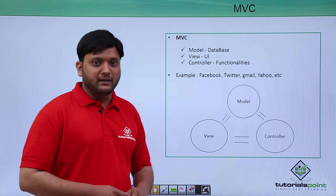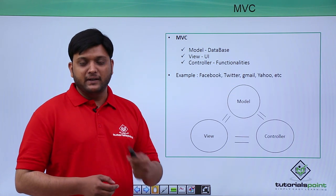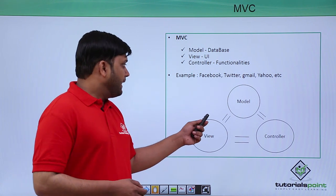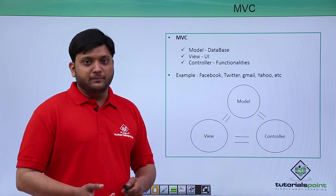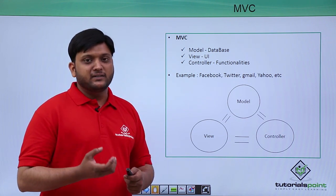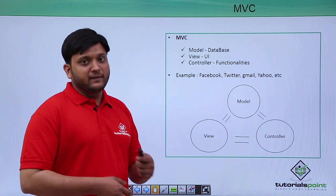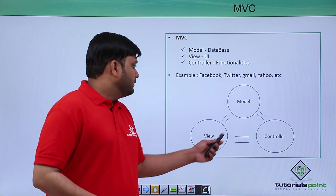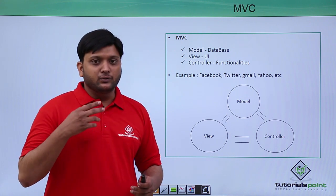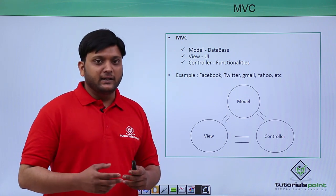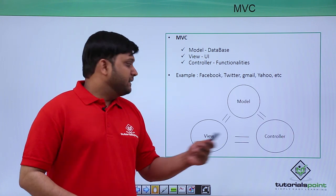For example, you can take Gmail. So what you are able to view on the front end, that is called view. Whatever database is being maintained by Gmail — for example, inbox information, account details — that comes under model. And controller means it is the functionalities. Suppose if you are trying to edit or delete some mails, so what will happen — some actions are performed — that comes under controller.